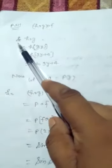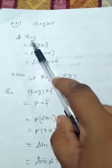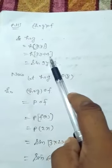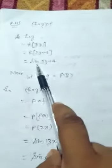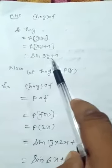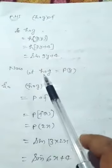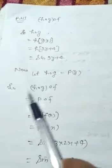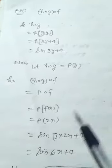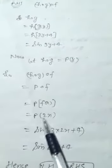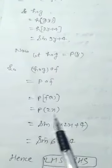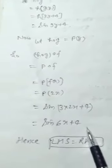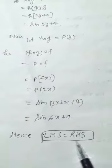Alternatively, we first find h∘g: h(g(y)) = h(3y + 4) = sin(3y + 4). Let h∘g = p, so p(y) = sin(3y + 4). Then p(f(x)) = p(2x) = sin(3·2x + 4) = sin(6x + 4). Hence LHS equals RHS.